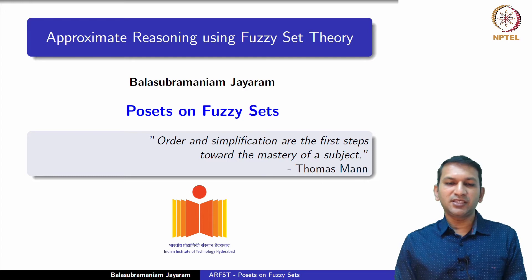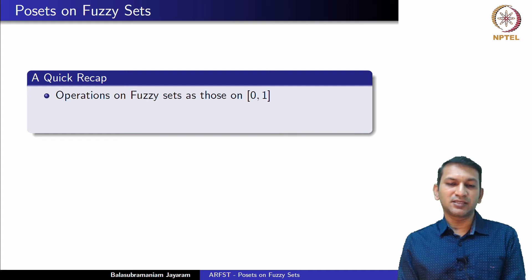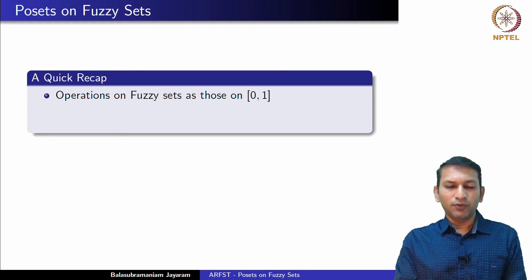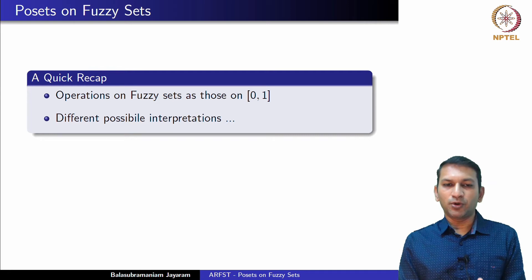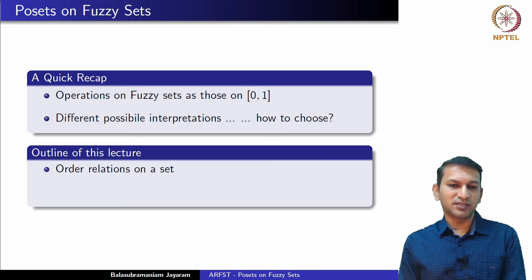Hello and welcome to the next of the lectures under this course titled Approximate Reasoning using Fuzzy Sets. In the last lecture, we have seen that operations on fuzzy sets can be seen as operations on the corresponding unit interval [0,1]. We have also seen that there are different possible interpretations available for these operations and we wondered how to choose among them.